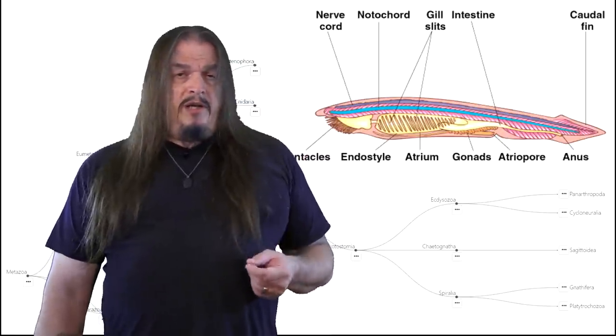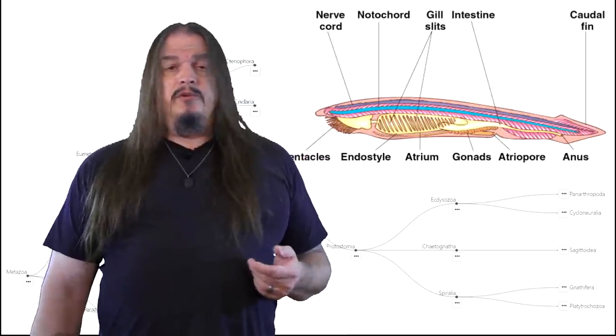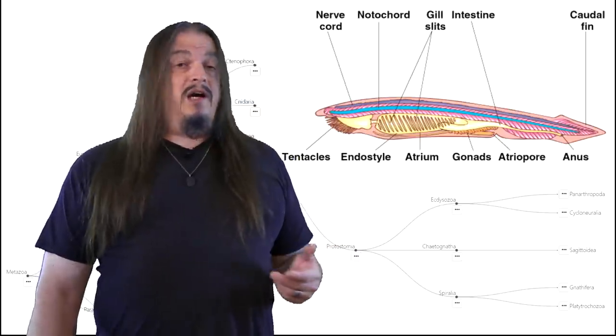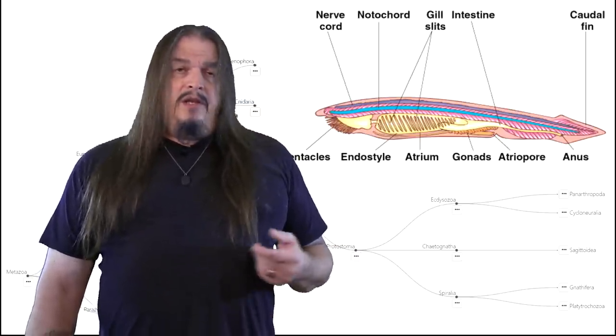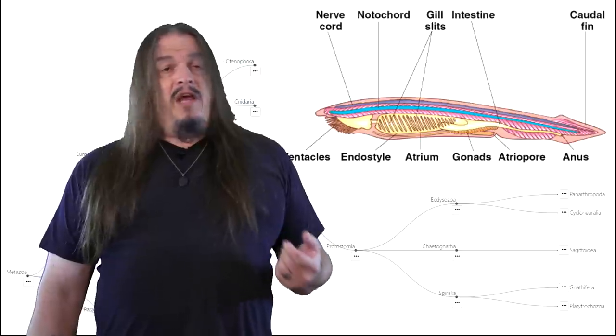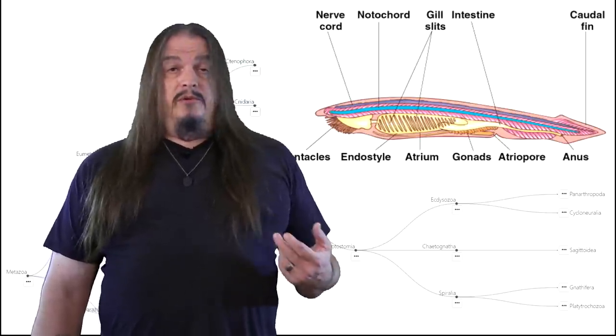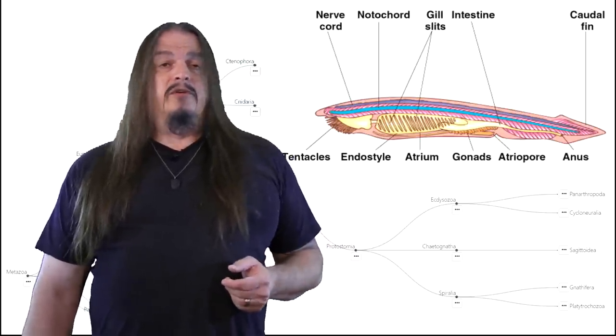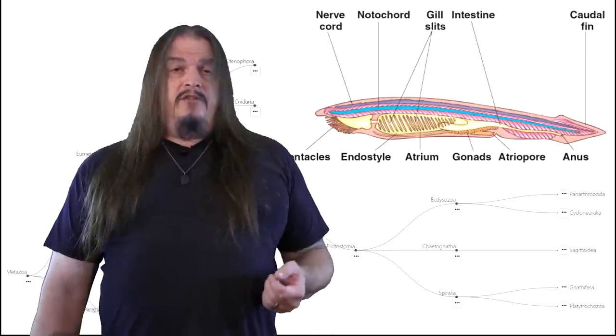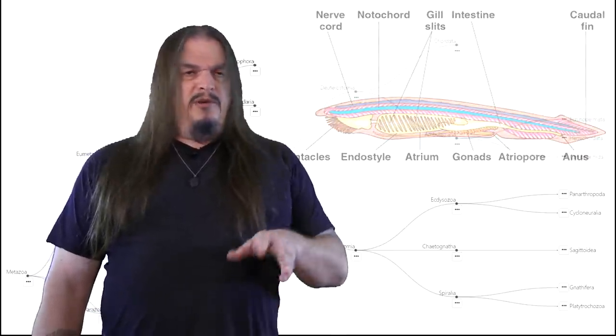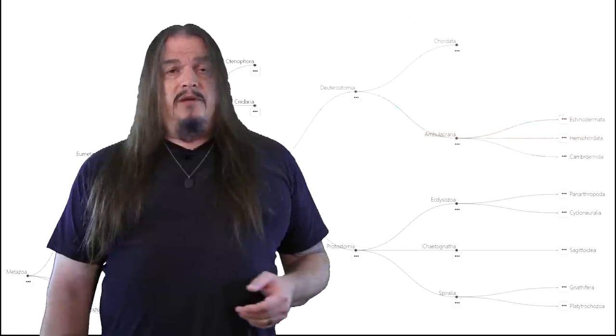This flexible rod helps fish to swim and also supports the developing embryos in so-called higher animals. The name hemichordata means half cord because theirs is similar to but not quite an actual notochord. There are hemichordates in the fossil record in the lower or middle Cambrian, pretty much where you'd expect them to be for part of our evolution.